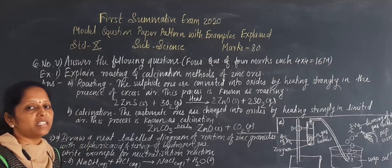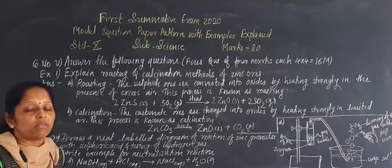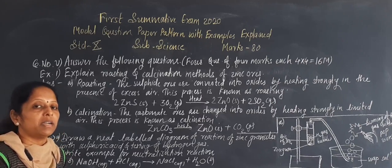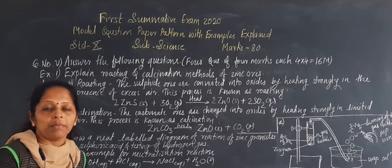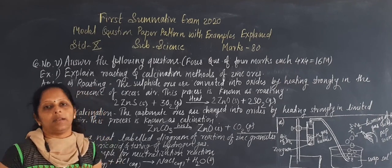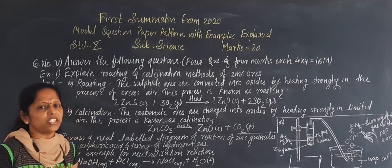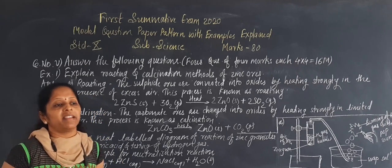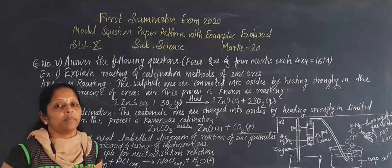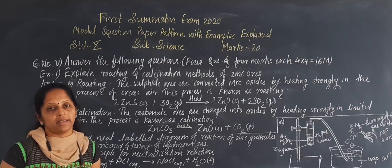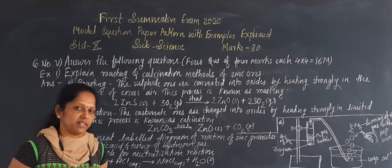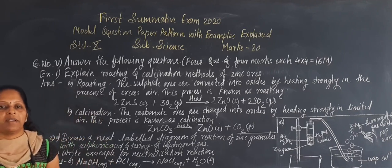Question number 1 has multiple choice objective type questions with one mark for each. There are 8 questions for a total of 8 marks. The second question is 'answer in one sentence' with one mark for each question, and there are also 8 questions for 8 marks. So the second question is also there for 8 marks.